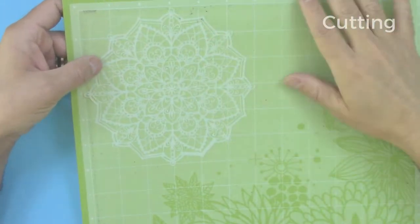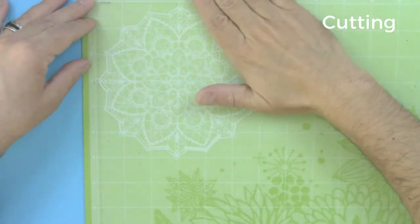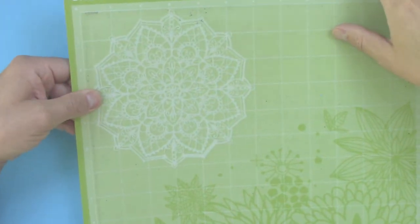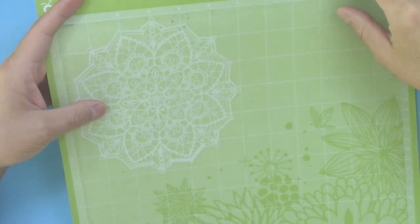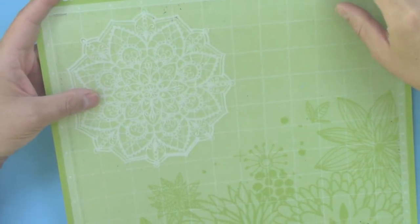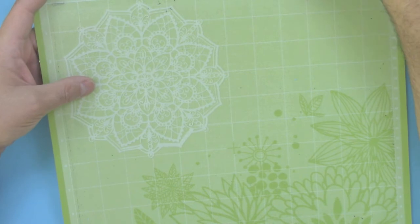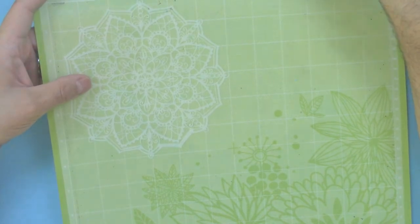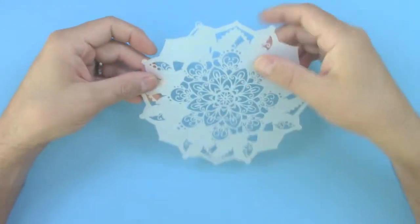Now when cutting your stencils, make sure to remove any loose piece of plastic that might have come off your mat. Pass your hands on top of your stencil, and this will remove any little debris. Make sure to do this every now and then to avoid those little pieces from sticking to your blade.